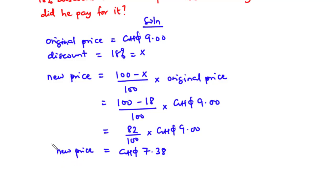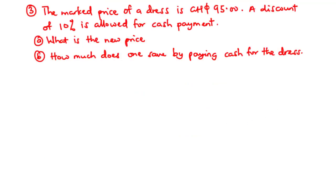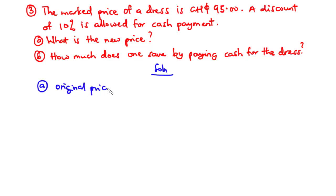Now for question 3: the marked price of a dress is 95 Ghana cedis. A discount of 10 percent is allowed for cash payment. Part a asks for the new price, and part b asks how much one saves by paying cash. The original price is 95 Ghana cedis and the discount is 10 percent.